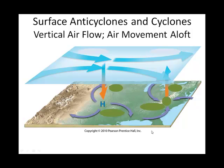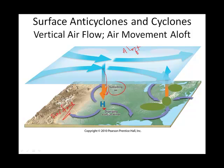Looking at the anticyclone first on the slide: you can see that clockwise movement around the anticyclone, with the air diverging at the surface. Notice the subsiding air — that's the air aloft. It's the subsiding air that maintains our central high pressure. At the upper part of the troposphere, air is converging, and it gets squeezed down and subsides to sustain that high.